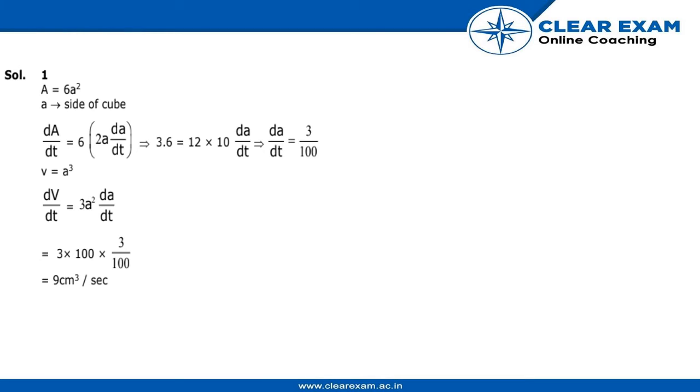da/dt would be 3 by 100. As we know that volume is equal to a³ where a is the side of the cube.